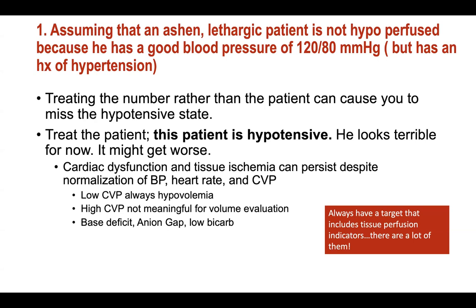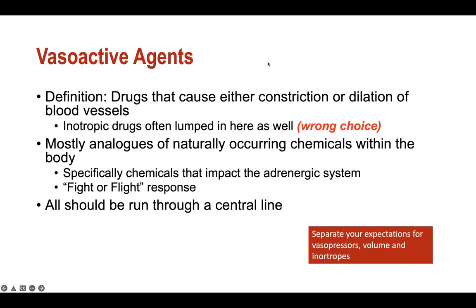Blood pressure can be very misleading and you always need a platform with tissue perfusion indicators. These aren't the only ones - anion gap, low bicarb from a chemistry, a venous gas to get a base deficit - that's going to give me extraordinary information. I can get more information with more values or with a central line, but I can always use my chemistry to understand my patient's perfusion abnormalities.